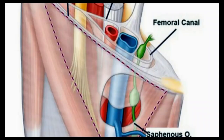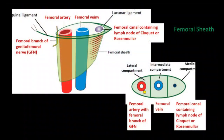The femoral sheath is a funnel-shaped fascial sheath enclosing the upper 3 to 4 cm of the femoral vessels. It is split into three compartments by two anteroposterior septa: lateral, intermediate, and medial. The lateral compartment includes the femoral artery and the femoral branch of the genitofemoral nerve. The intermediate compartment includes the femoral vein. The medial compartment is small and is called the femoral canal.